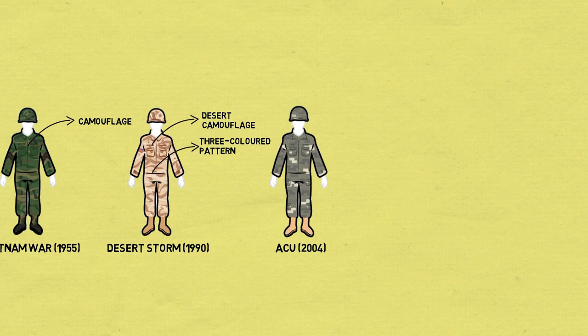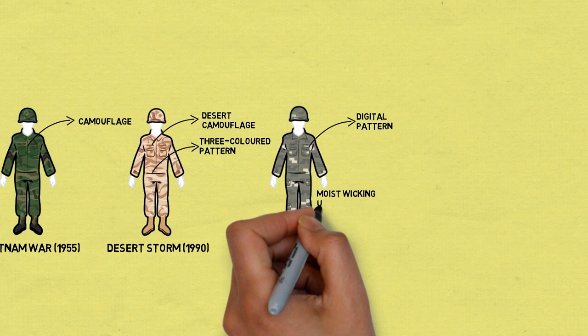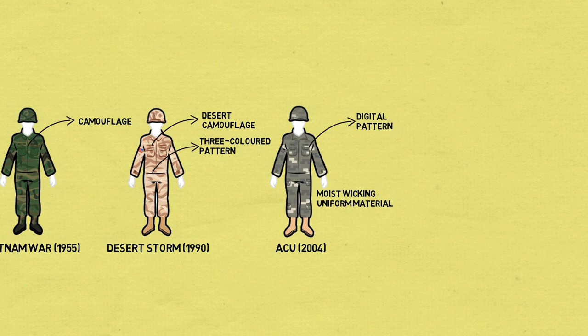The Army has consistently changed camouflage patterns since 1991. In 2004, the Army introduced the Army Combat Uniform, which was modeled after the Marines' digital pattern uniform. The full Army Combat Uniform includes moisture-wicking socks and T-shirts, coats, pants, combat boots, and a patrol cap.